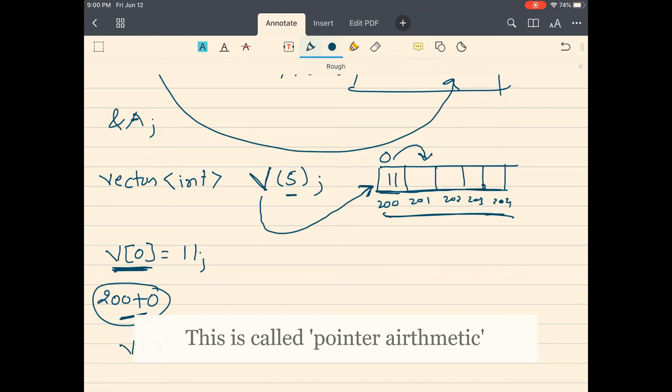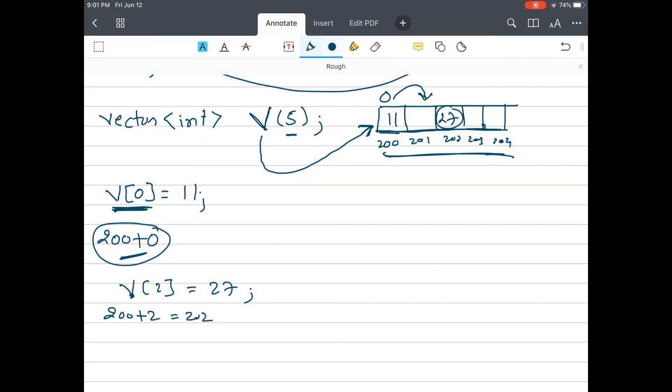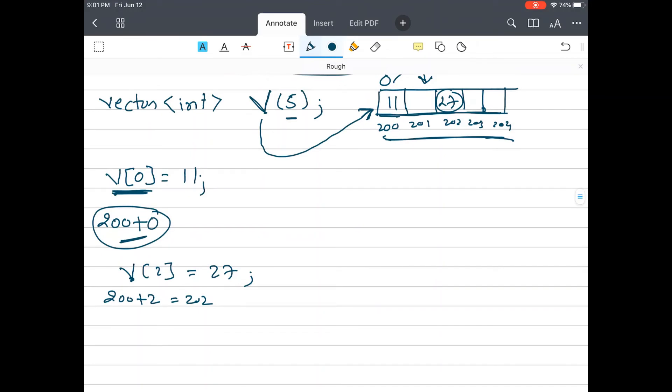If you do V[2] equals, let's say, 27, you say okay, V points to 200 location, add 2, so this is 202, and put 27 inside and this gets 27. But let's assume it was starting with index 1.